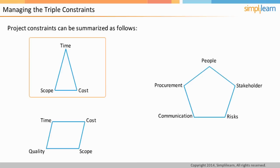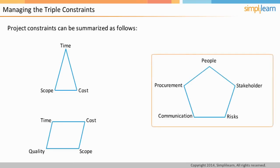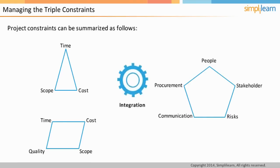Quality is a primary concern for a project manager. Therefore, the project manager has to make trade-offs to keep the scope, cost, time, and quality in balance. To achieve the balance, the project manager also needs to manage other aspects of the project such as the people, stakeholders, risks, communication, and procurements. The project manager plays the essential role of integrating all these different aspects of project management. In the PMP examination, you can expect business scenario-based questions focusing on the triple constraints.